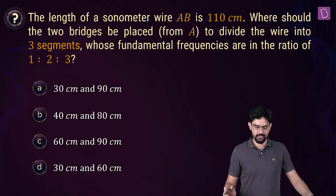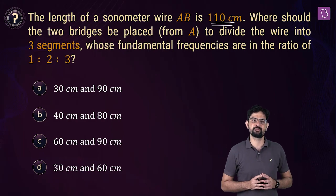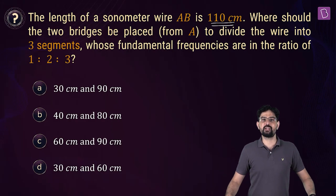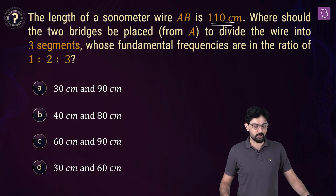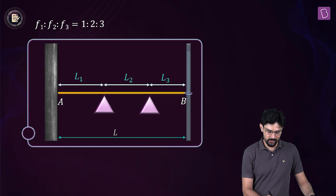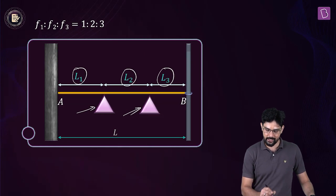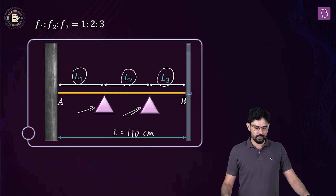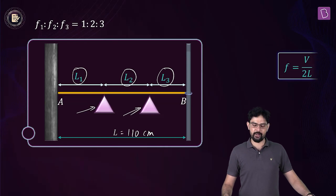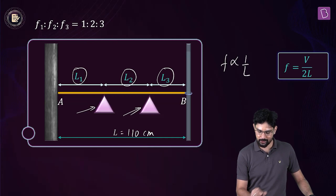The length of a sonometer wire AB is 110 cm. Two bridges are placed from end A, dividing the wire into three segments. The fundamental frequency of vibration in these three segments should be in the ratio 1:2:3. The fundamental frequency in each segment is V/(2L), so frequency is inversely proportional to the length of the segment.